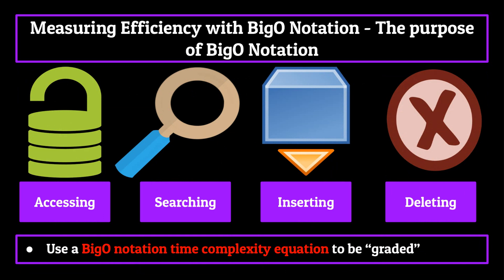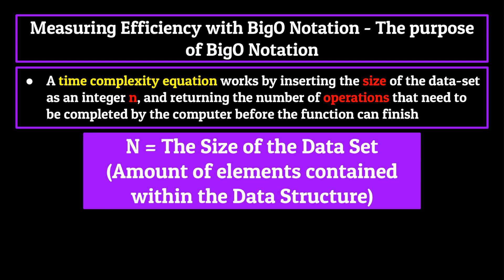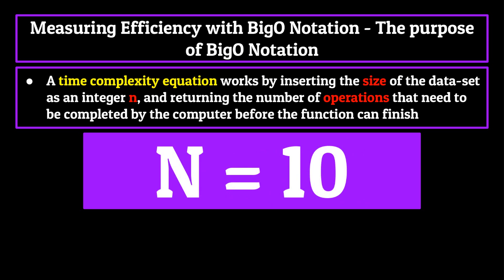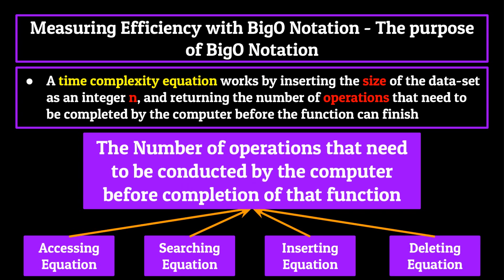What is a Big O notation time complexity equation? A time complexity equation works by inserting the size of the data set as an integer n, and returning the number of operations that need to be completed by the computer before the function can finish. The integer n is simply the size or amount of elements contained within the data set. So for example, if we have an array of size 10, we would place 10 into the different equations for accessing, searching, inserting, and deleting used for an array, and returned back to us would be the number of operations that need to be conducted by the computer before completion of that function.